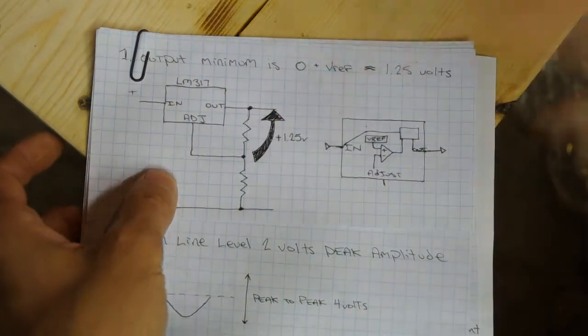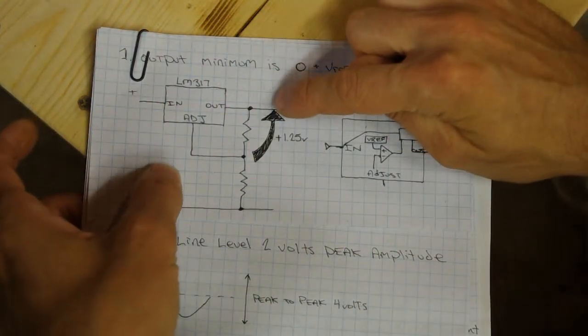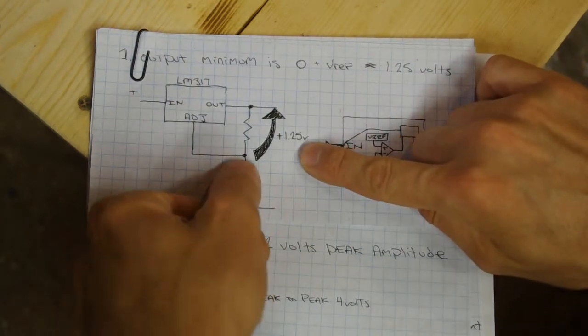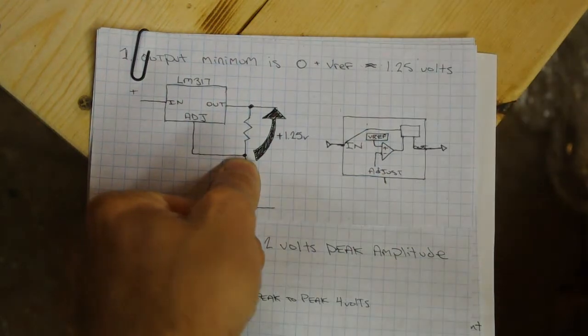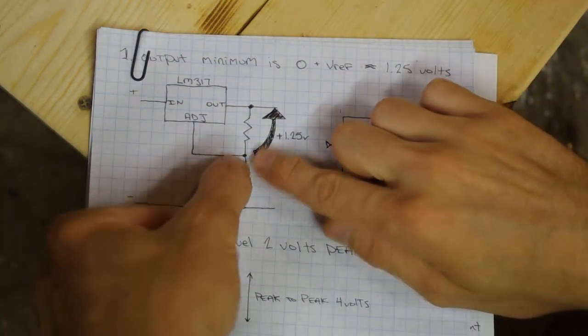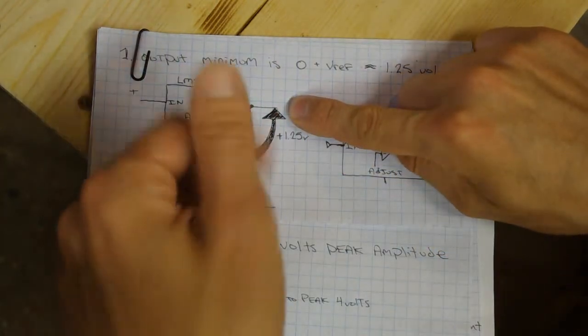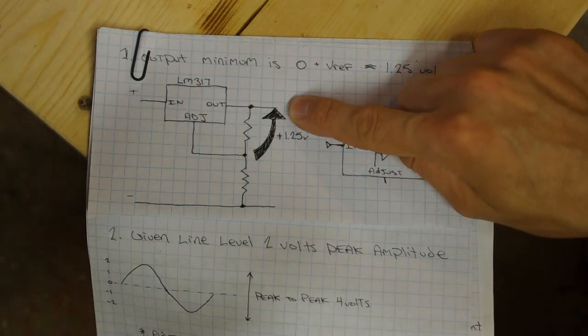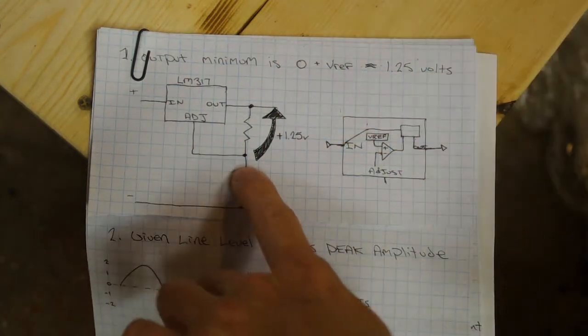These two resistors set what voltage outputs on this LM317. Your output is always going to be 1.2 volts higher than the voltage at your adjust pin. Now this makes sense because if the adjust pin were at zero, your output would be 1.25 volts, which coincidentally is the minimum voltage that the LM317 can output because this can't go any lower than zero.